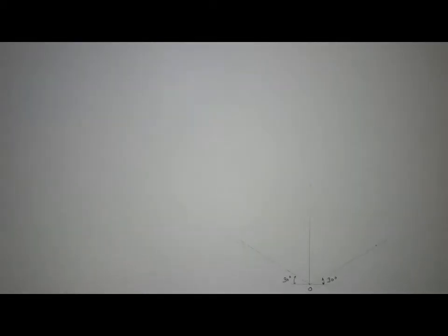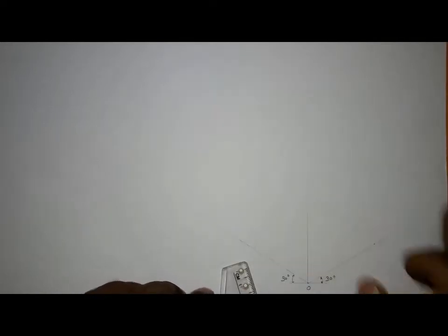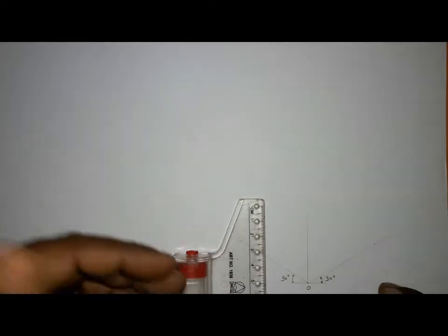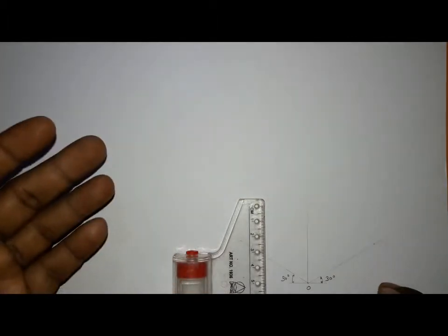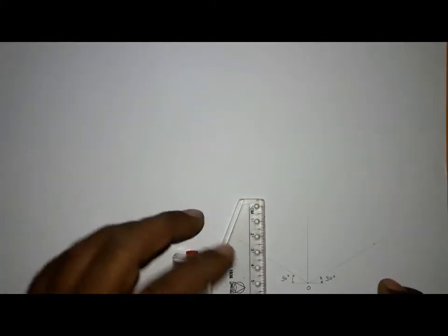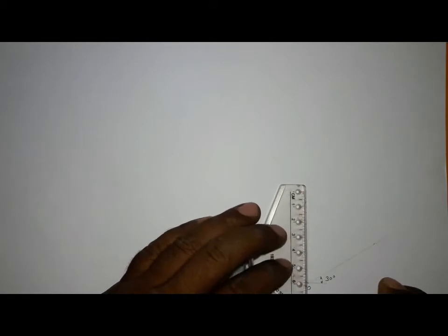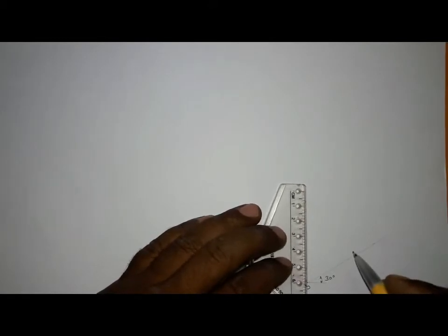Hello friends, in this video we will see how to draw a cylinder in isometric projection. Suppose I want to draw an isometric cylinder of 60 mm diameter and 80 mm length.